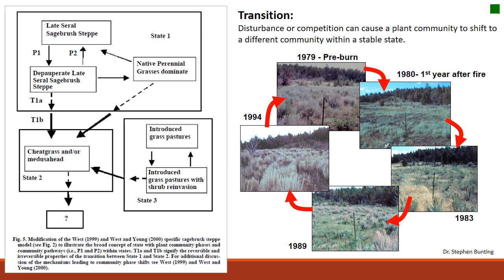Here's an example of a burn transition. In 1979 we had pre-burn conditions — probably a late-seral sagebrush steppe community. Over time we had a burn, and in the first year after burn we shift to more of a perennial bunchgrass situation. Then, following a linear succession pathway, sagebrush starts to come back in as more of a climax community. Once they build up and become dominant, we can have another fire and shift back to perennial bunchgrass. This is a transition within that top box — the community is still healthy and functioning, and fire is a natural process.